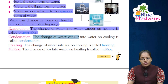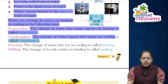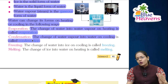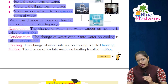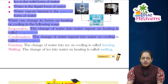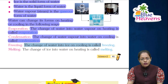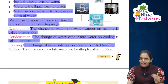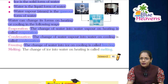Next is condensation — the change of water vapor into water on cooling is called condensation. Steam becoming water again, gaseous form returning to liquid form on cooling, is called condensation. Next is freezing — the change of water into ice on cooling is called freezing. When water is cooled it becomes ice, meaning liquid changes to solid form.